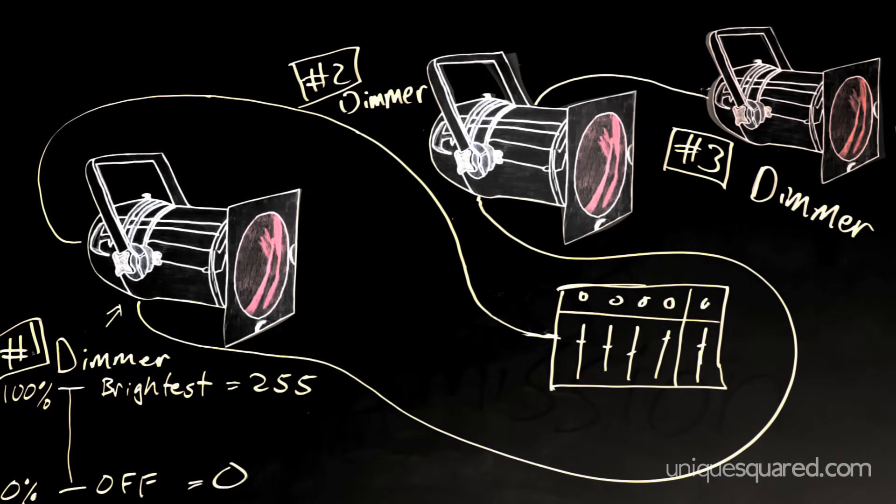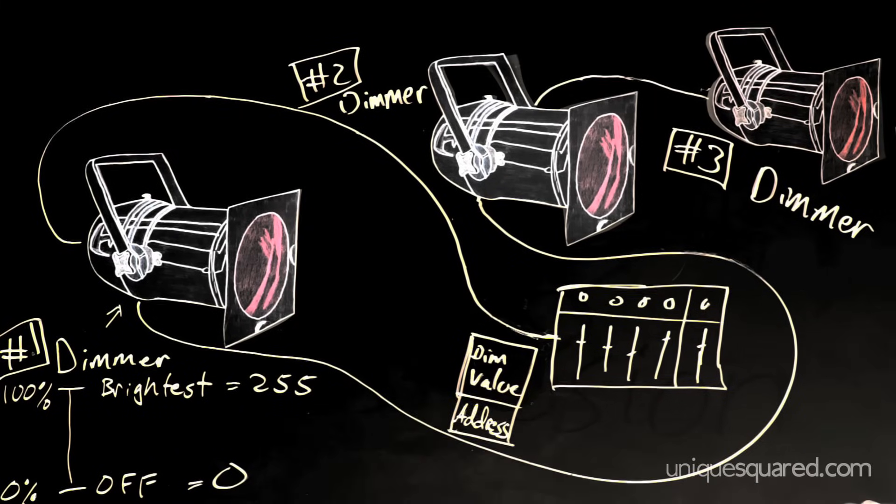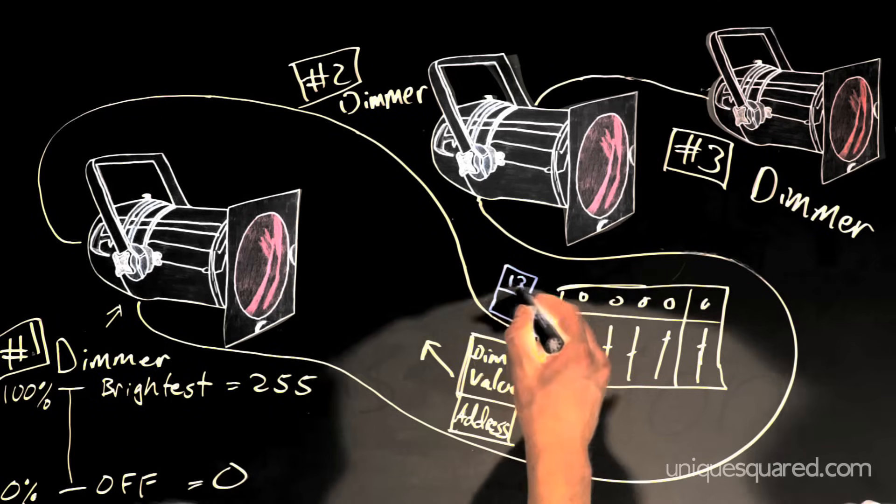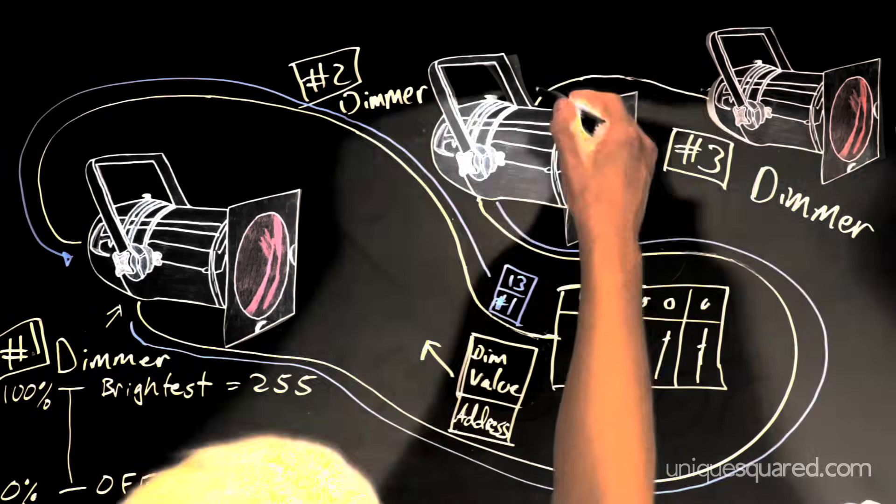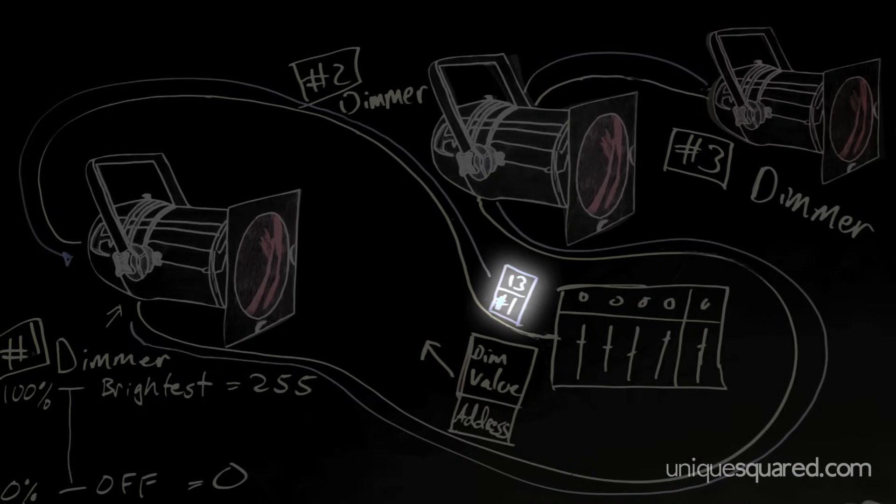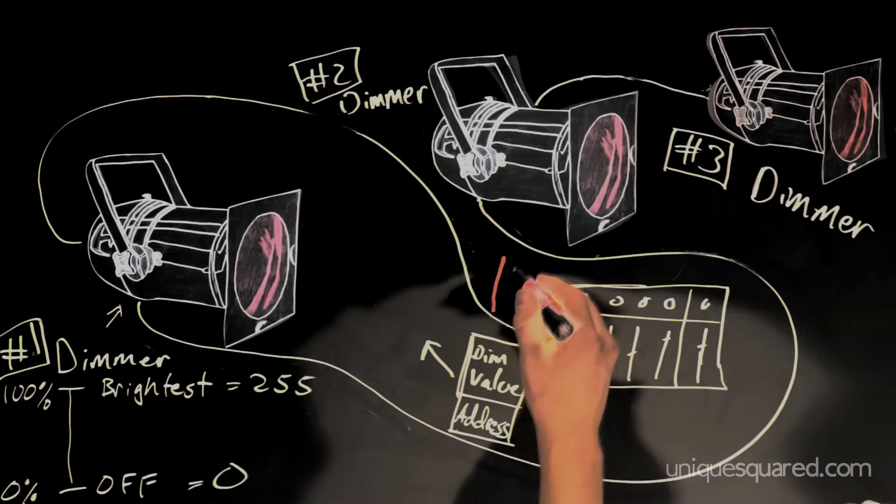Then we put a number between 0 and 255 in a package, and we give that package an address. Then the controller will send that package out to each light in the series. If that address matches the address on one of the lights, the package will be delivered to that light and its brightness will be adjusted according to the value in the package. You know, the value between 0 and 255.